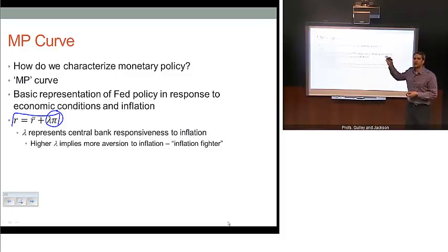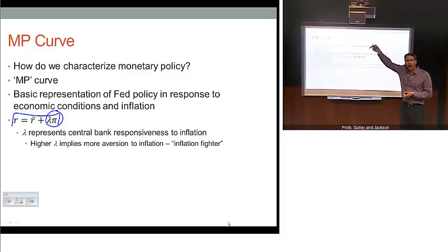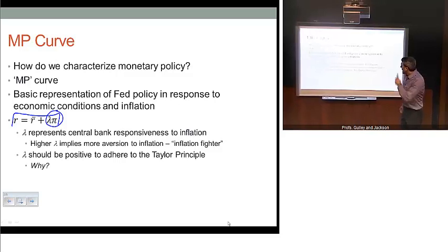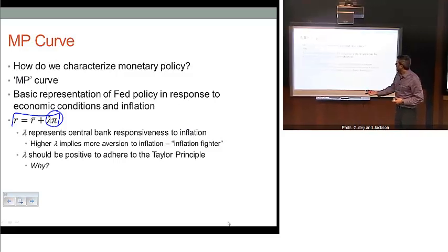As we've talked about in the past, this is going to be contractionary to the economy to try to push inflation back down. For that reason, the lambda parameter should be greater than zero. If that lambda parameter is greater than zero, that's going to result in the so-called Taylor Principle applying.